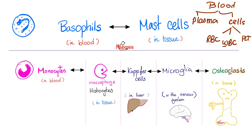The white blood cells include basophils, neutrophils, eosinophils, monocytes, and lymphocytes. Basophils can change their name: in the blood we call them basophils, in the tissue we call them mast cells. Monocytes are the same thing — in the blood we call them monocytes, in the tissue we call them macrophages or histiocytes. Today in the granuloma, we will call them epithelioid cells or epithelioid histiocytes. In the liver they become Kupffer cells, in the nervous system they become microglia.